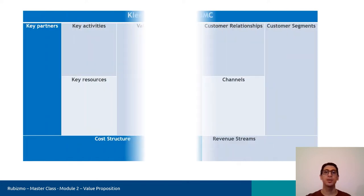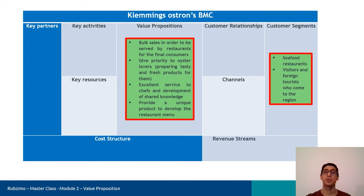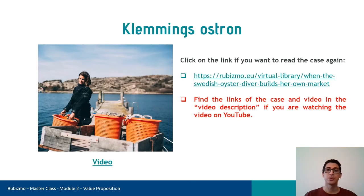Now it's time to go more in detail and work on the customer profile and value map. I will describe them including the case Clemmings Ostron that we worked on its business model canvas in the previous session. You can also read through the case again by clicking on the link or watch a short video of that company by clicking on the picture. And if you are looking at the video on YouTube, you can find the links of the case and video in the video description.